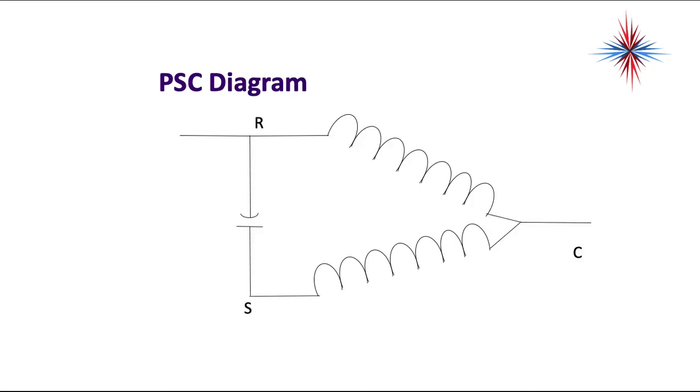A PSC diagram varies slightly from the split phase diagram that we looked at in the split phase video. We have our line voltage that comes in here and connects to the run winding, connects to common and back to neutral or line two depending on what your voltage readings are.